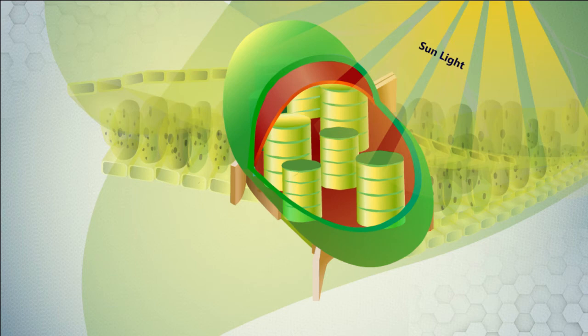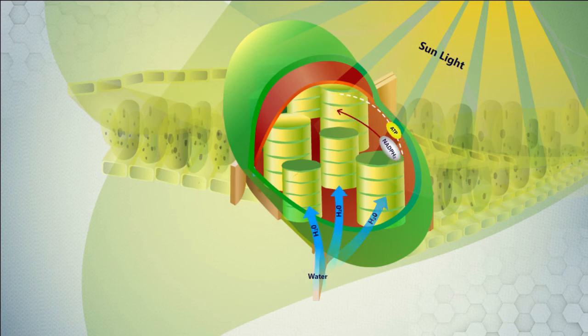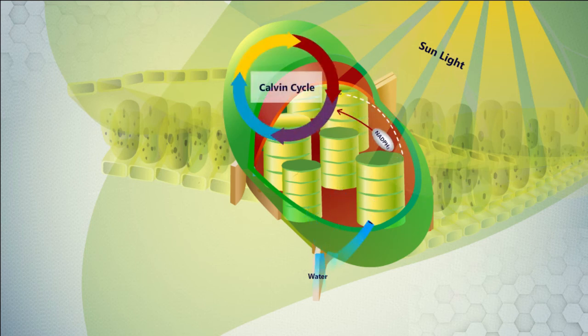In the first stage, light-dependent reactions capture the energy of light. As a result, water (H2O) is oxidized and oxygen (O2) is released. The electrons freed up from water are transferred to ATP and NADPH.